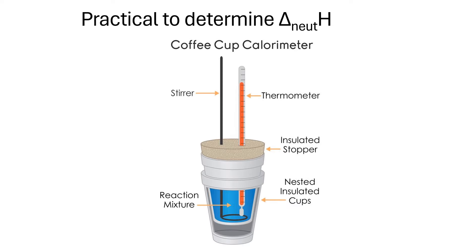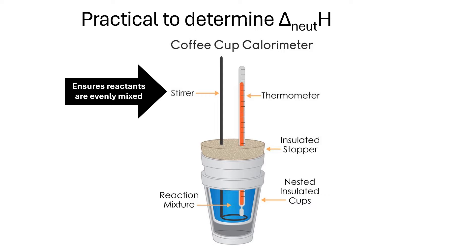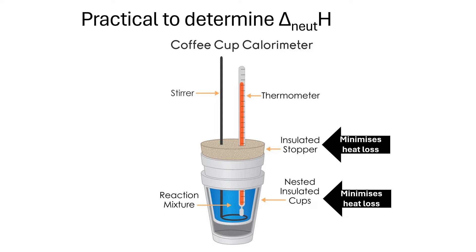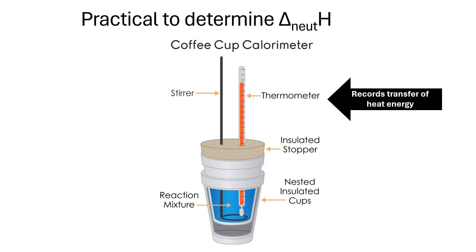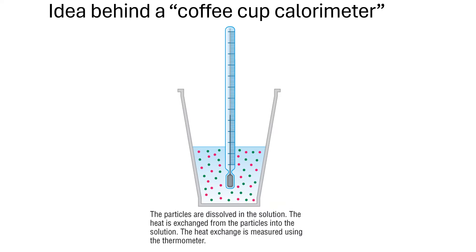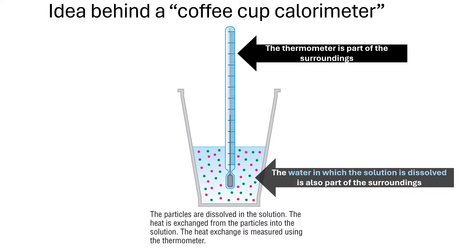Let's review the practical setup. It can be quite straightforward, like two coffee cups, one put inside another. Inside we've got the reaction mixture, a stirrer that helps to move the reactants around to make sure they're evenly mixed, and an insulated stopper that goes in the top. One coffee cup stacked inside another provides extra insulation — both of those are for minimizing heat loss. The thermometer records any transfer of heat energy either in or out of the chemical system. The thermometer and the water in which the solution is dissolved are both part of the surroundings.